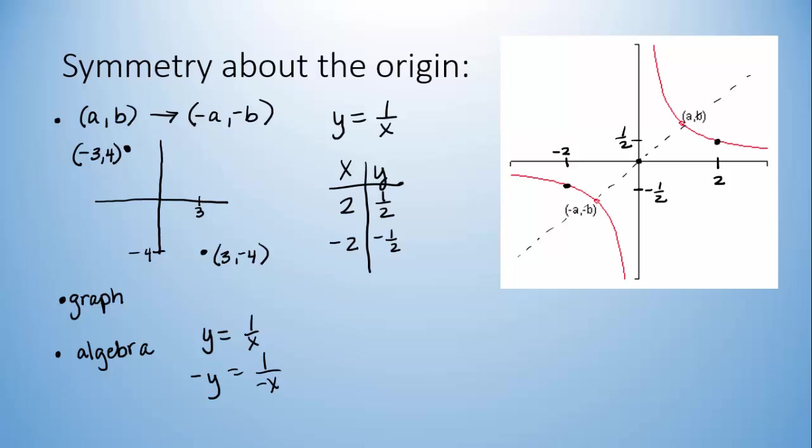Well, that doesn't look the same, but we could just multiply both sides by negative 1, and then we would return to y equals 1 over x. The original equation comes back.